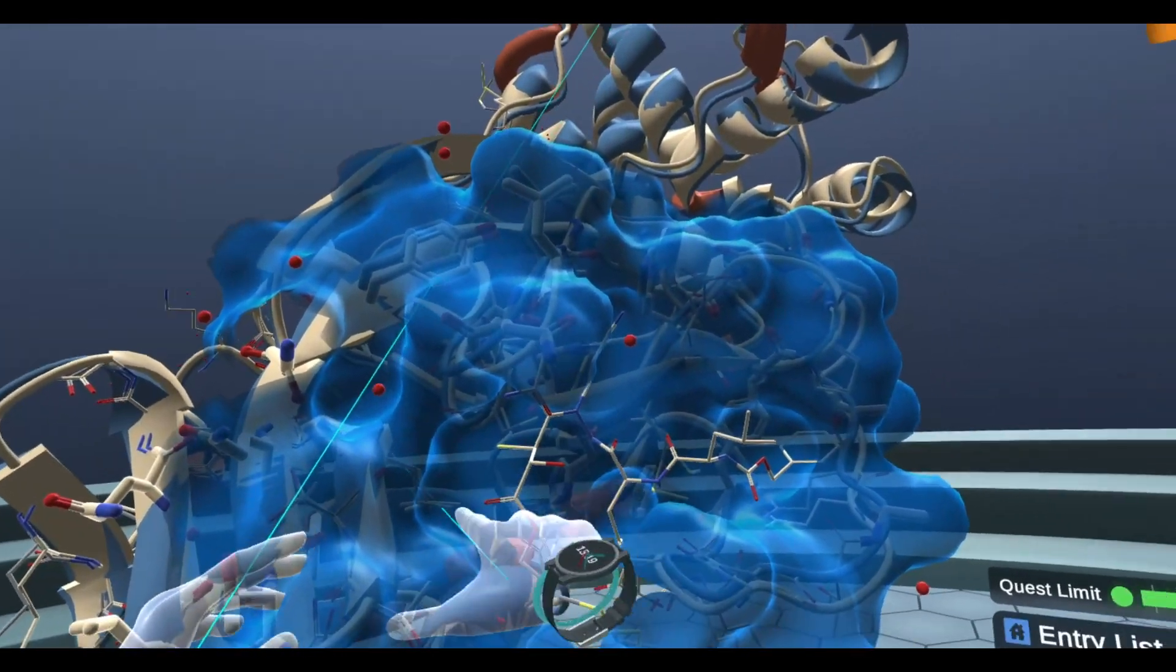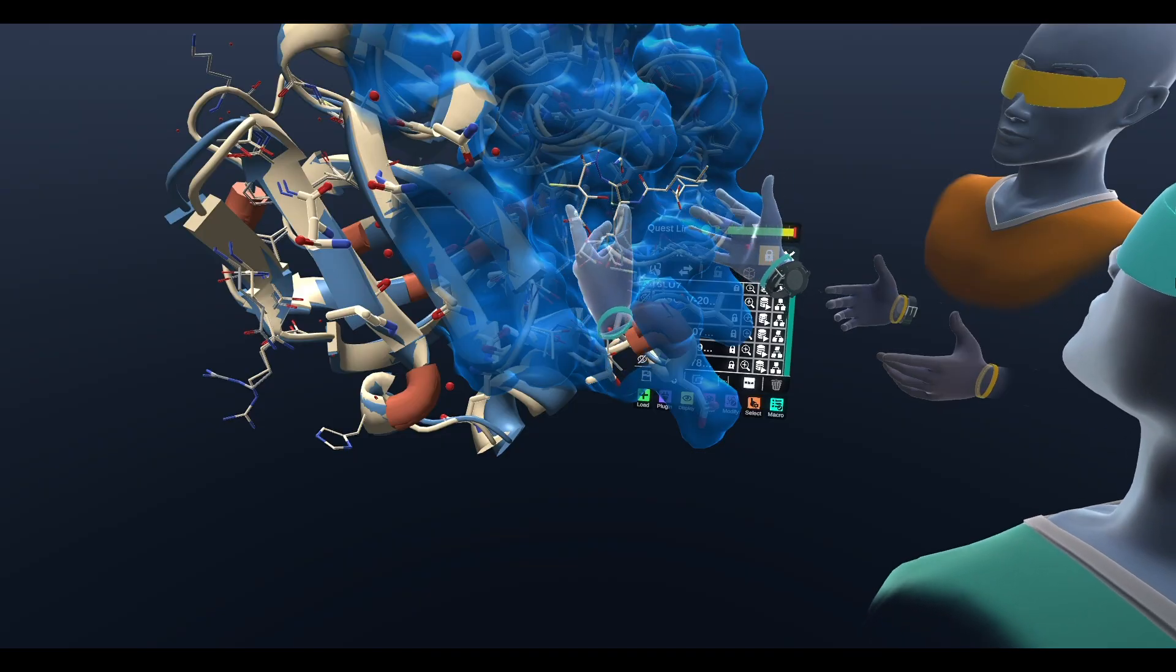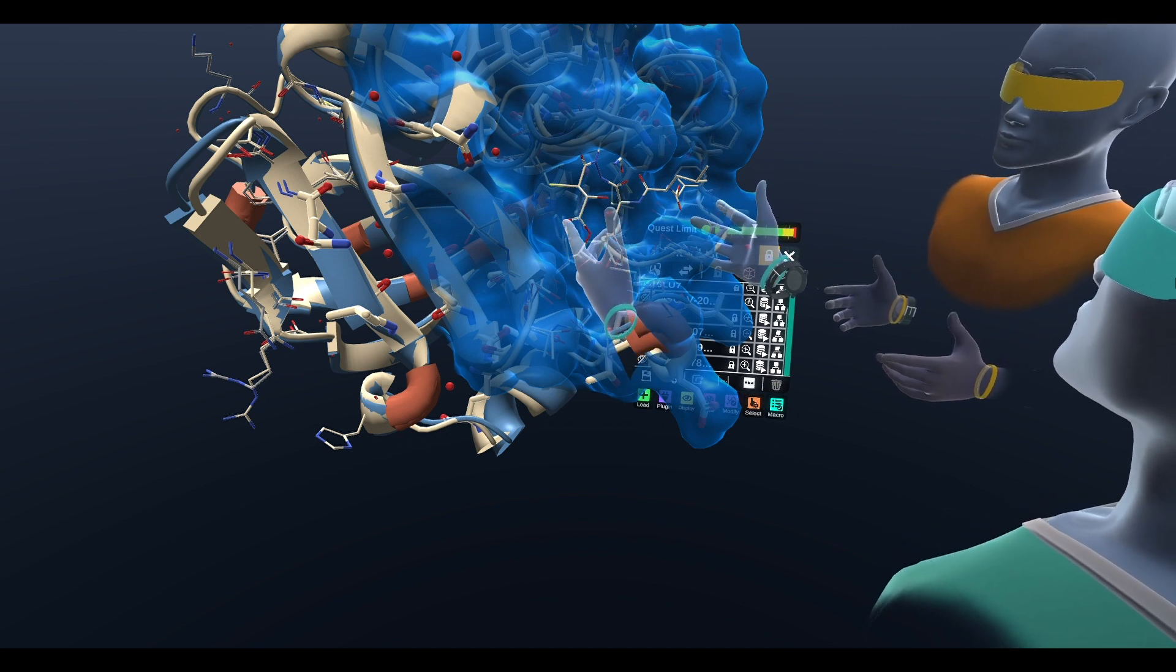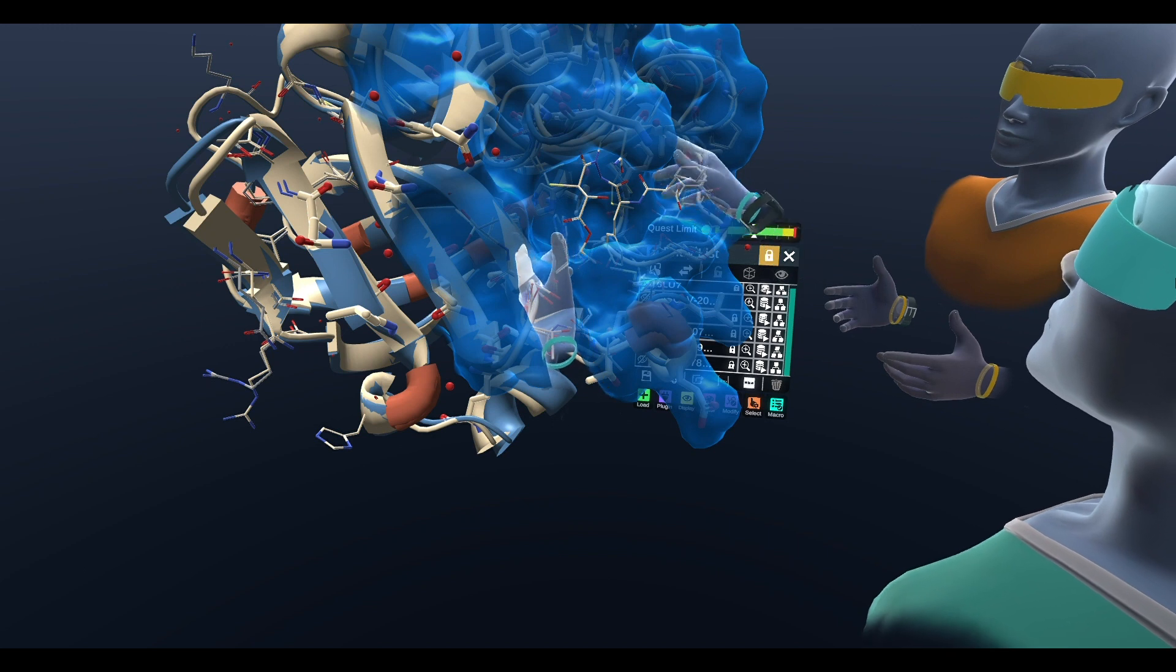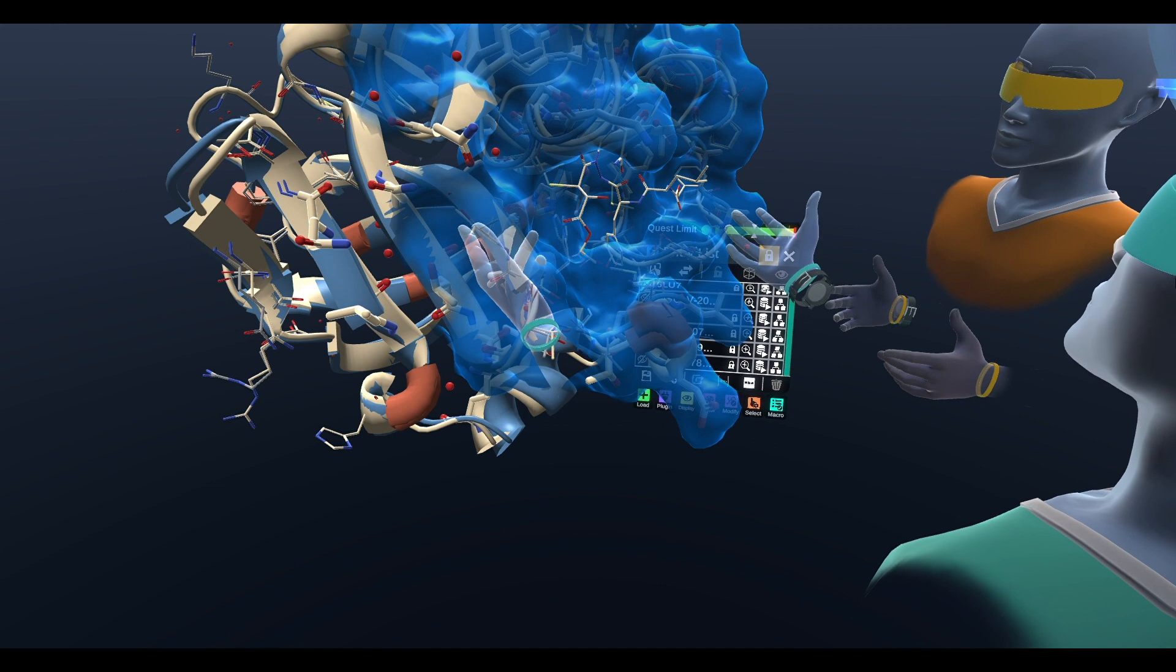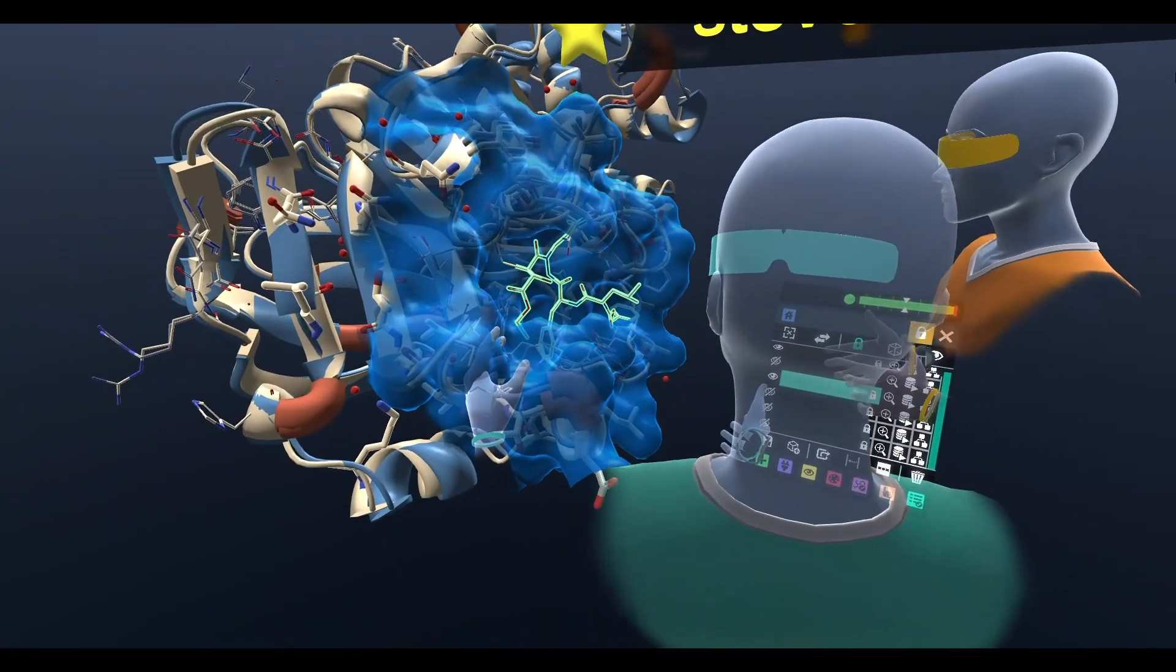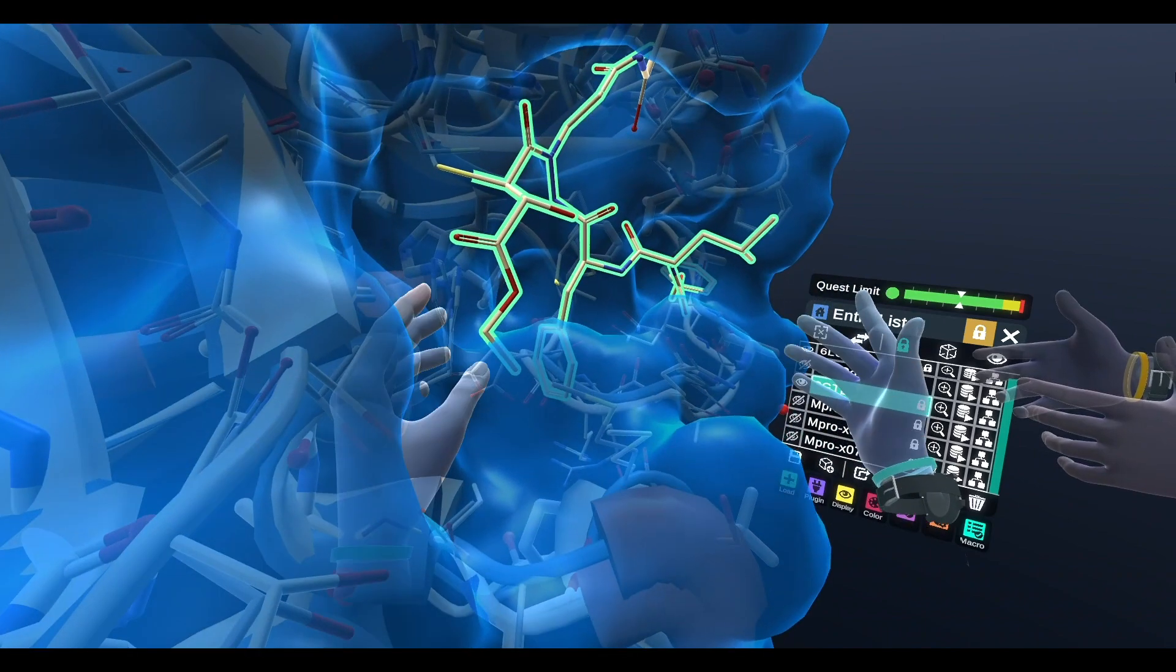That means that this binding pocket is so important to the main protease of coronavirus that all the mutations are in sort of extraneous spots that aren't really a part of the main binding pocket here. This is also really important because before we had a crystal structure of the 2019 CoV-2 main protease, scientists were able to take that older SARS protease and use it for modeling to discover new drugs.